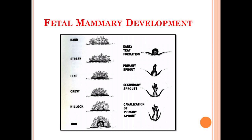Here are the different developmental stages involved in the mammary development inside the fetus. First, the band, streak, line, and crest are the thickening of the ectoderm formed on the midline. After that, the hillock will form — a primary structure signifying the location of mammary development. Then the bud will form, which will canalize to form the primary sprout. The primary sprout gives rise to the secondary sprout, which forms the major ducts. The primary sprout will also lead to the formation of the early teats. This was the chronological order of the different structures formed during fetal mammary development.